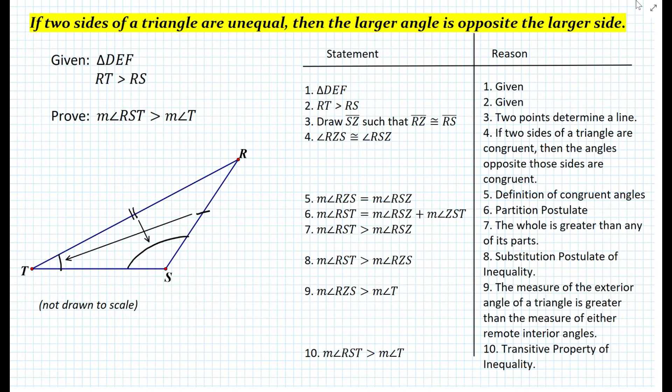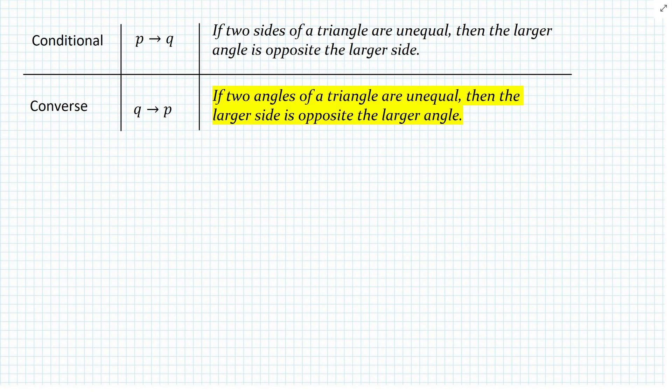Does the converse of the statement work as well? The converse is: if two angles of a triangle are unequal, then the larger side is opposite the larger angle. That theorem also makes sense; however, let's prove it first.